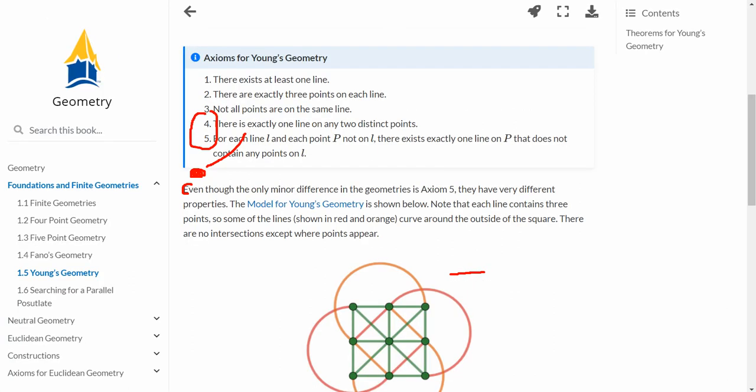And what does axiom 5 say? Well, axiom 5 says that basically is a parallel condition, right? That for any point P not on L, there exists exactly one line on P that doesn't contain any points of L.